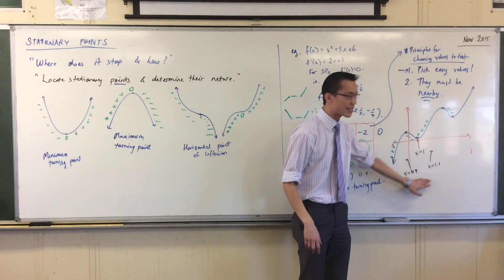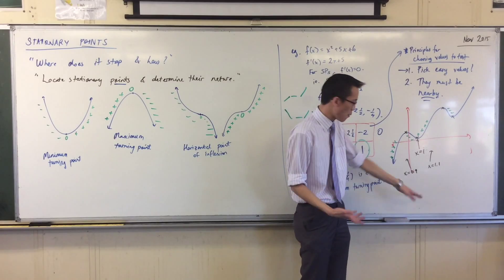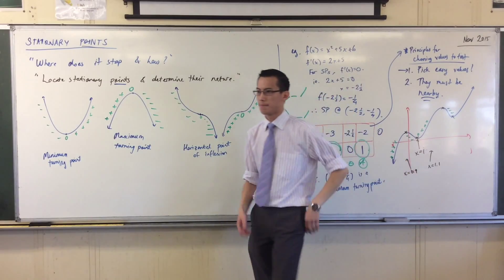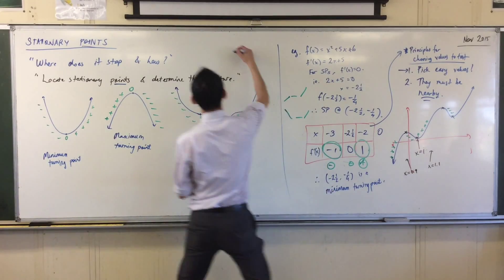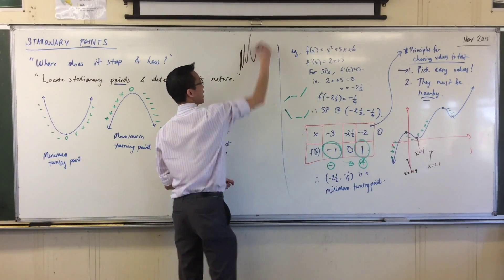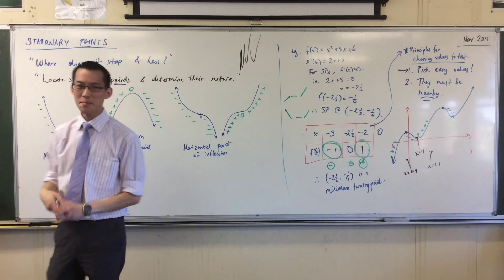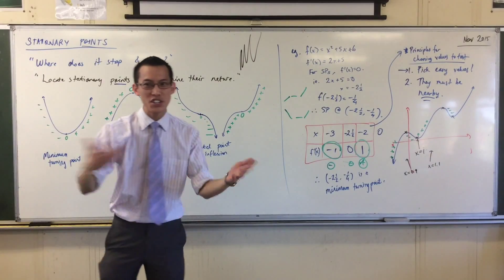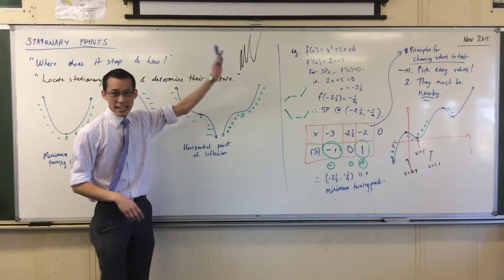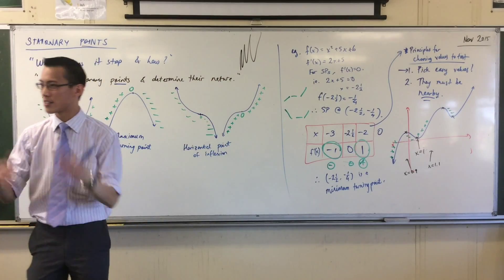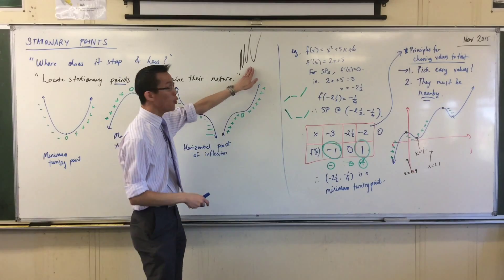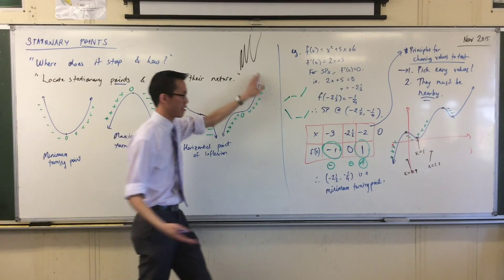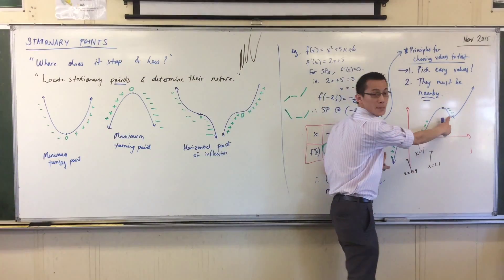But my point is, even if I said 0.9 and 1.1, I could still make a function that looked like this. And it doesn't matter if you went 0.1 off, you're still too far away. Being that any function can be designed such that no matter how close in you get, you could still go past another stationary point.